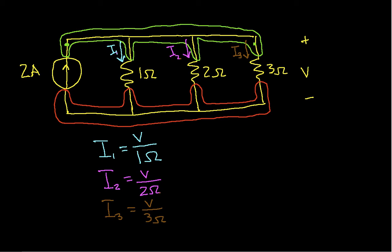Now, we need to apply Kirchhoff's Current Law to the top node. The version of Kirchhoff's Current Law that I will use for this example is that the sum of the currents flowing into the node is equal to the sum of the currents flowing out of the node. So flowing into the node, we have two amps from the source. And then flowing out of the node, we have I1, I2, and I3. So now all we need to do is plug in our expressions: V over 1 ohm, V over 2 ohms, and V over 3 ohms.